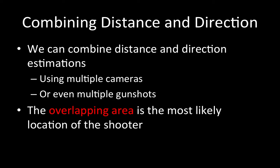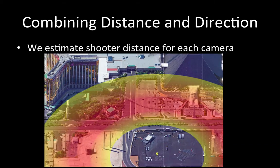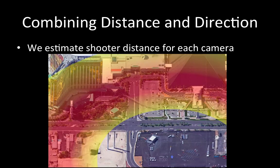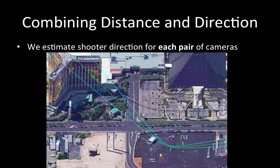So we can combine these two methods, and the overlapping area is the most likely location of the shooter. In the web interface, we ask the user to place the camera on the map first. We then use the first method to estimate shooter distance for each camera, and then the second method to estimate the direction for each pair of cameras.